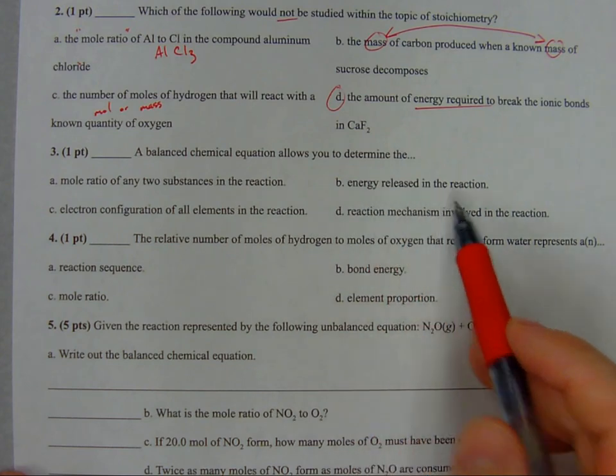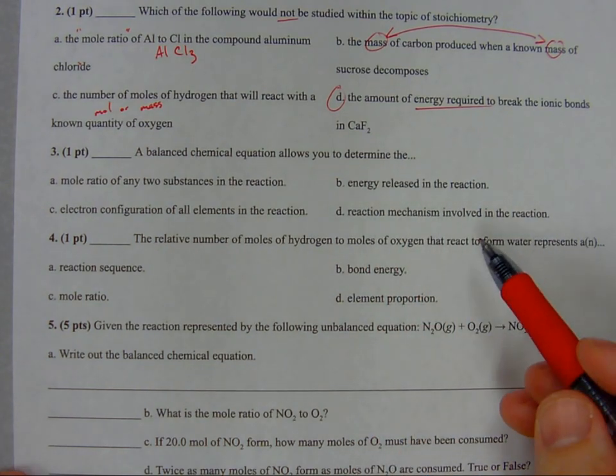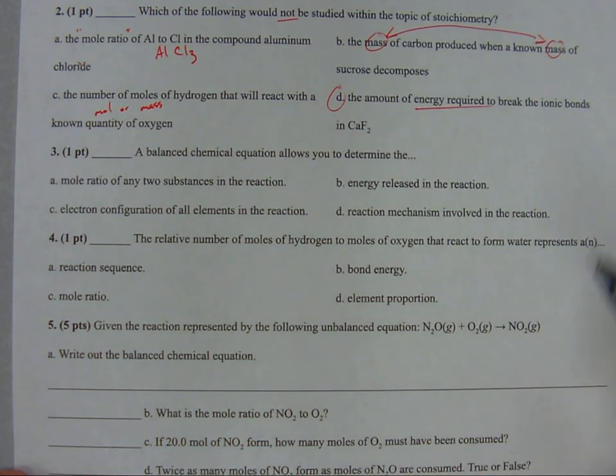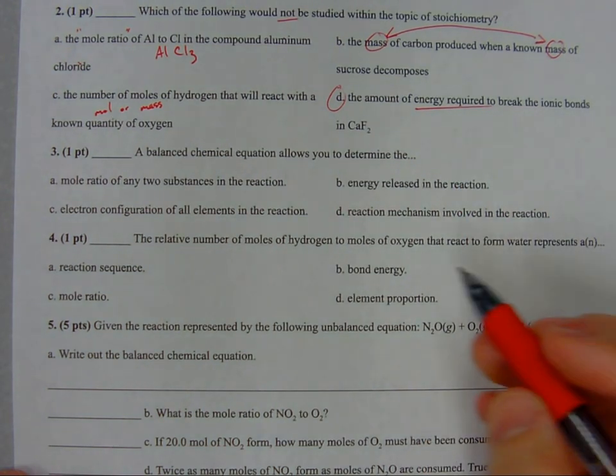B, energy released in the reaction. Well, we just talked about in number two that the energy required to break bonds is not a topic of stoichiometry, so I actually don't like that one.